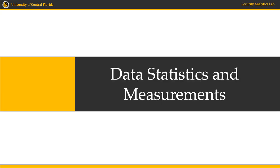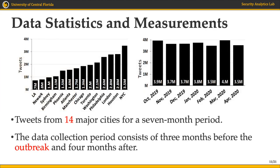In this part of the presentation, I will show the distribution of our collected dataset over different times and locations. On the left figure, it shows the distribution of tweets over different cities during a period of 7 months. On the right figure, we can see the distribution of tweets over time — 3 months before the pandemic and 4 months after the outbreak — and on average each month has roughly 3.5 million tweets.